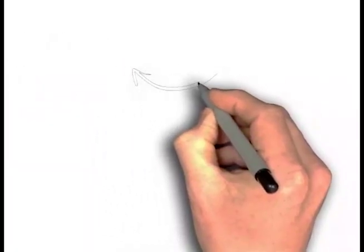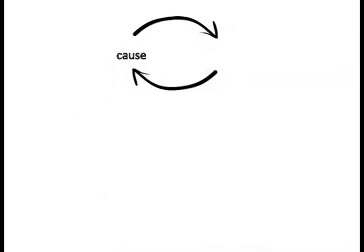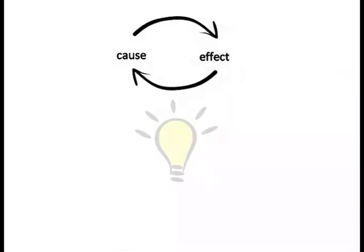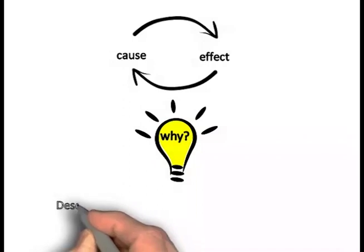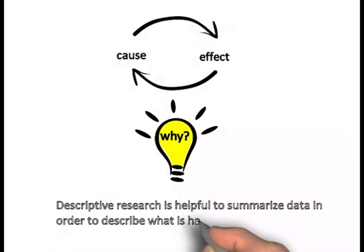A limitation of Descriptive Research is that there is no information gathered about cause and effect relationships, so it may shed no light on why something is happening a certain way. Descriptive Research is helpful to summarize data in order to describe what is happening.